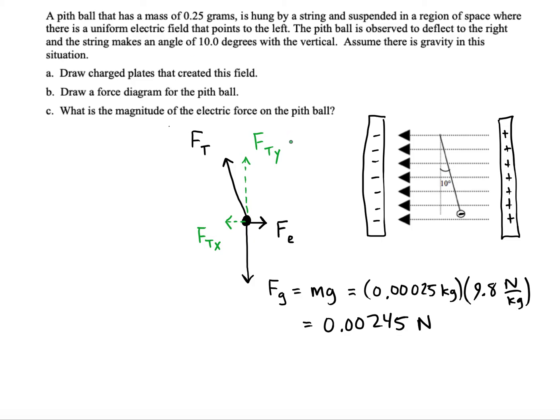That means that Fty must also be 0.00245 newtons. They have to balance. We know that because our pith ball doesn't accelerate up or down. It just stays where it is. So the y components have to be balanced, and the x components have to be balanced, too.